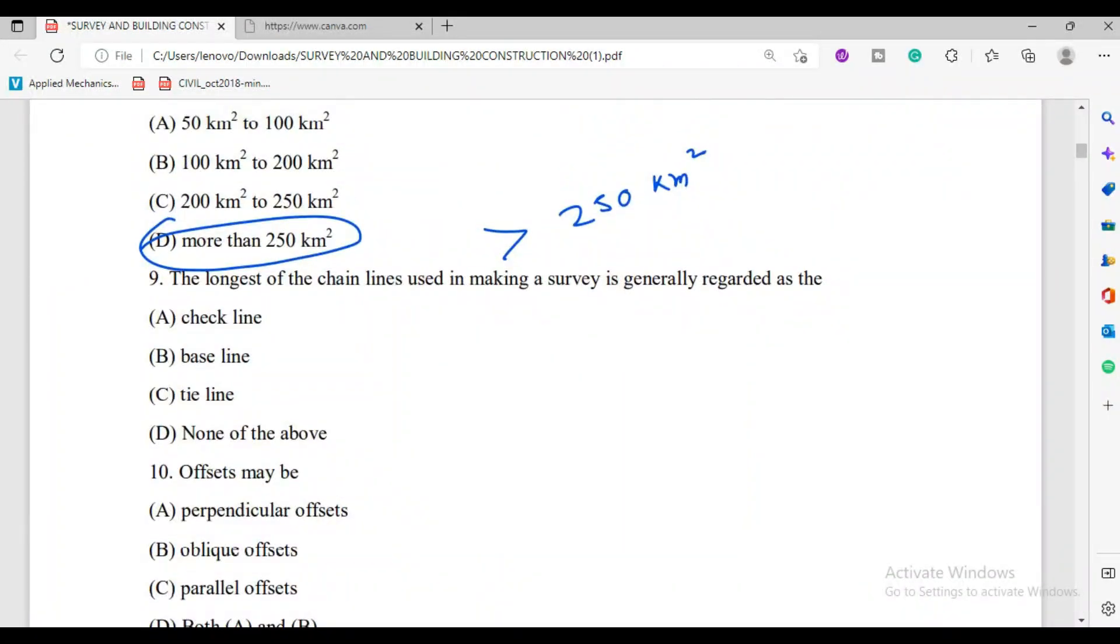The longest chain line which is used for making survey. The longest chain line we can say is the base line in surveying. Check line is where we check. Base line is the longest line. Tie line is used for offsets and connecting other lines. Obviously, base line is the longest chain line.